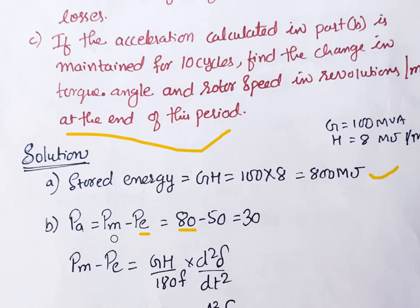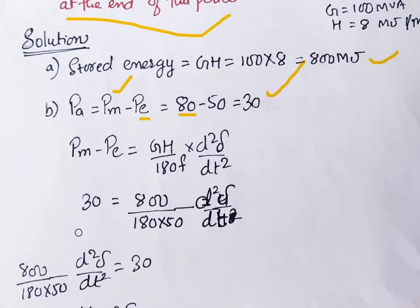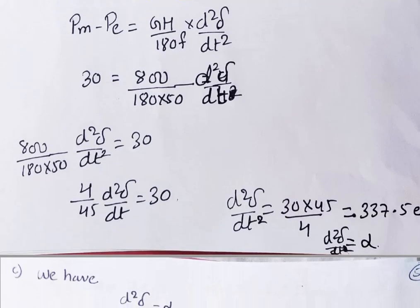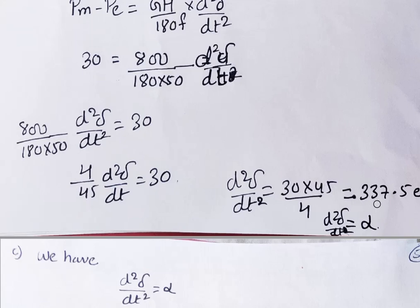Applying 30 MW into the swing equation with G·H = 800 and f = 50 Hz: (800 / (180 × 50)) × (d²δ/dt²) = 30. Solving, d²δ/dt² = α = 337.5 electrical degrees per second squared. This angular acceleration can also be referred to as α.